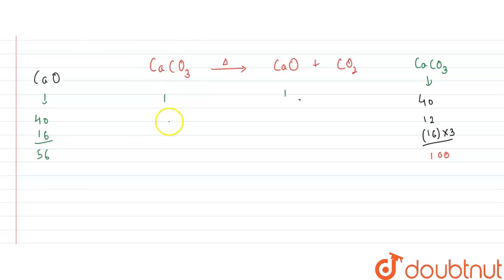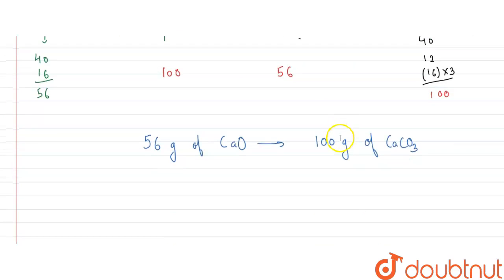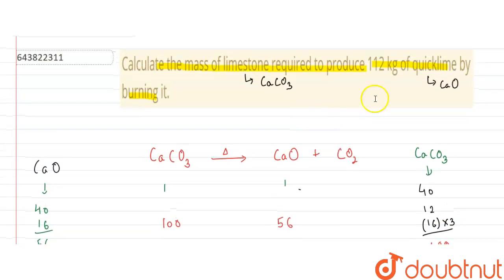So from here we can write that 100 g of CaCO3 is giving us 56 g of calcium oxide. Or I can write it vice versa: 56 g of calcium oxide will require 100 g of calcium carbonate. Because we have to calculate the limestone required, that is calcium carbonate. So from here I can write that 1 g of calcium oxide will require 100 by 56 g of calcium carbonate.